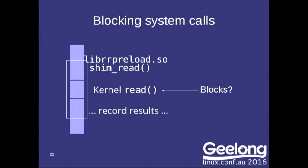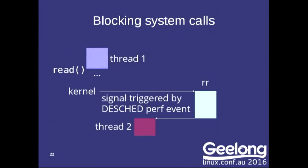There's another problem with this scheme: system calls can block. Some read calls complete very quickly; others might block because they go to the network or a pipe. If a recorded process's thread blocks on a read, and another thread is runnable, RR needs to schedule that other thread — but RR can only run one thread at a time. So RR needs to be notified when the currently running thread blocks. Fortunately, there's a Linux performance event called descheduled events that tells you when a thread has been scheduled off a core. We use that facility to get those notifications.